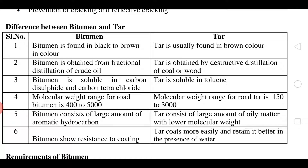Next, with respect to its origin, bitumen is obtained from fractional distillation of crude oil. Here, the crude oil obtained from wells is passed through a furnace, heated, and differentiated based on boiling temperature. At the bottom, having the highest boiling point of 300 to 350 degrees Celsius and above, is bitumen.